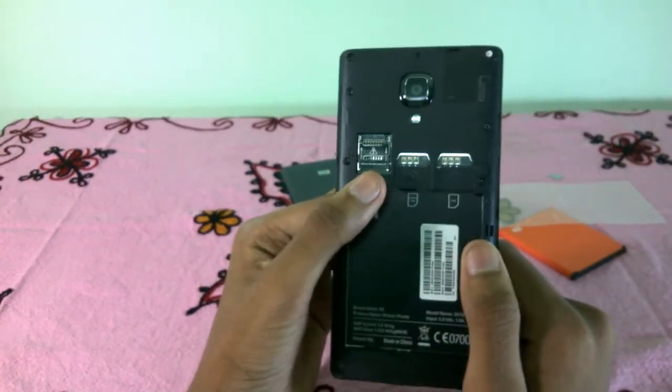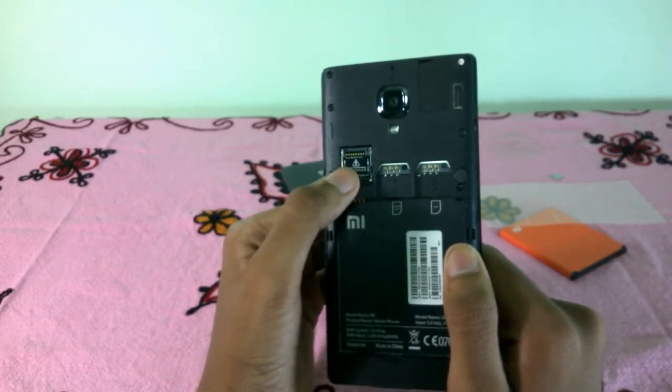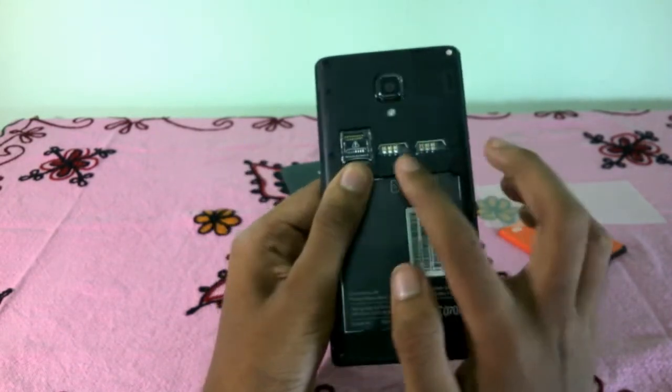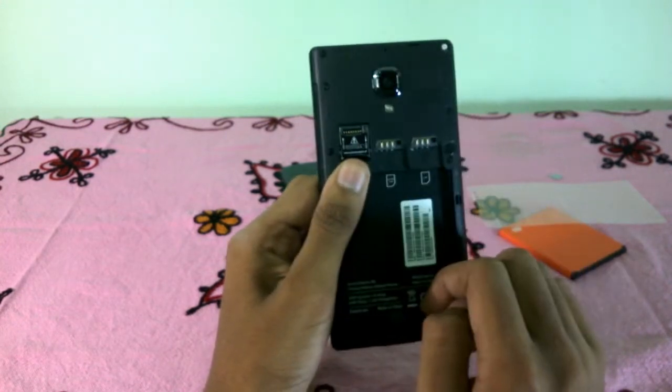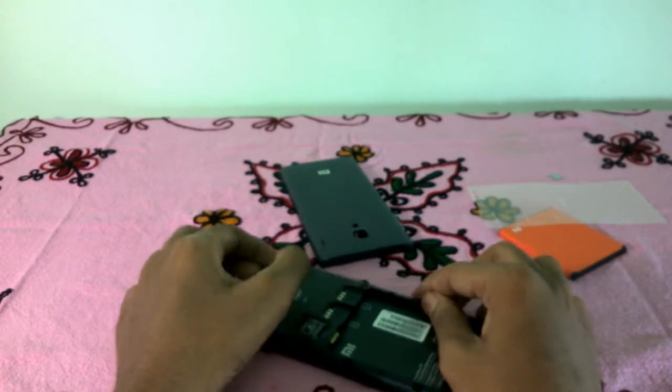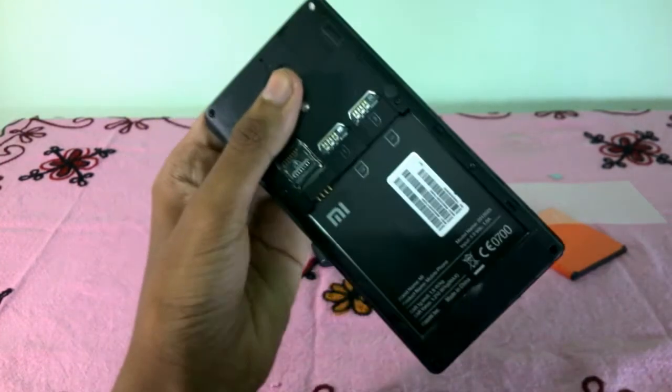When we take out the back cover, we can see the micro SD port here, I'm really sorry, the memory card slot here, and here are the two full-size SIM card slots. Let me also put in a memory card, so here is the memory card.